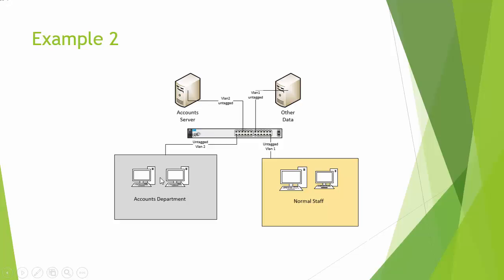Example 2 — the Accounts Department is on an untagged VLAN 1, and normal staff are on untagged VLAN 2. The servers are similarly untagged. There is no configuration needed on any of these devices — only the switch needs to be configured, which we'll cover in the practical. In this way, the accounts network can never talk to the staff network.